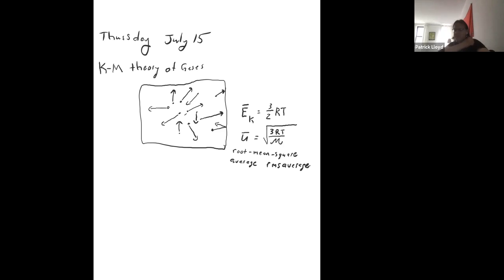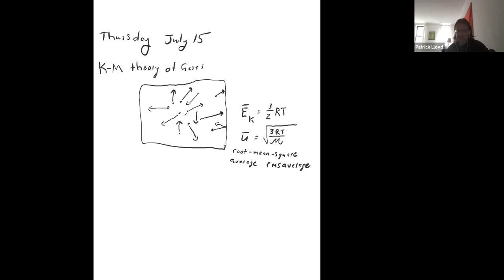There are different ways to take averages. The simple average is adding up all values and dividing by n. The root mean square average is where you square each value, add them together, divide by n, and then take the square root. That's what you'll see in the literature for kinetic molecular theory of gases. Next is the Boltzmann distribution.